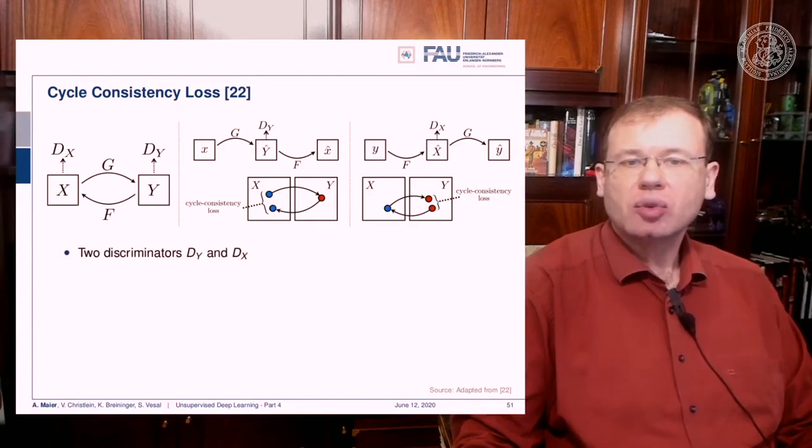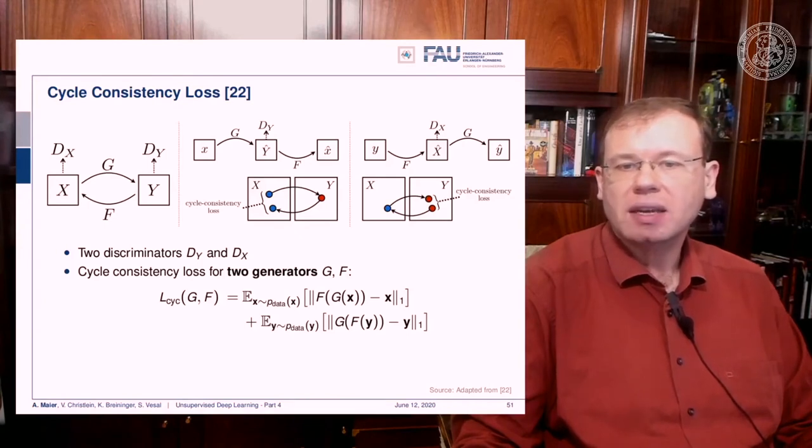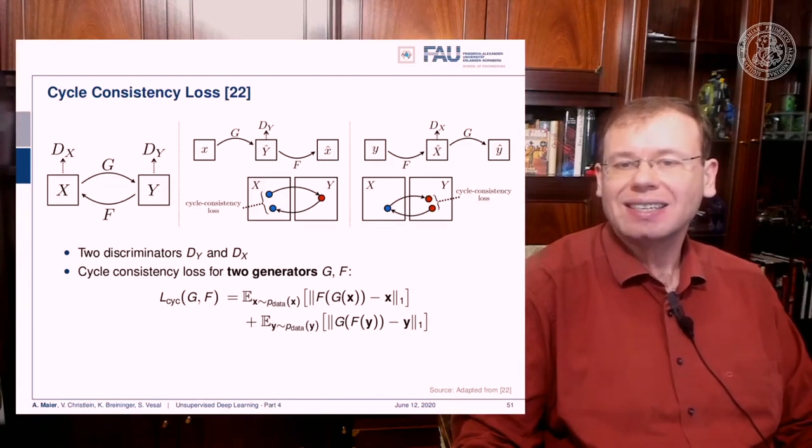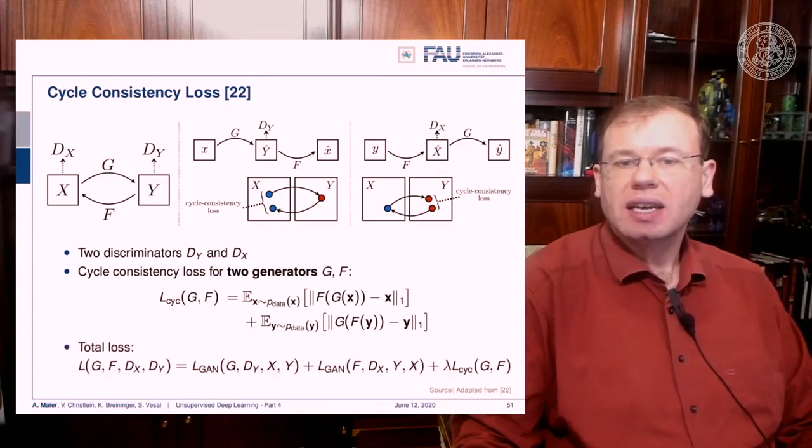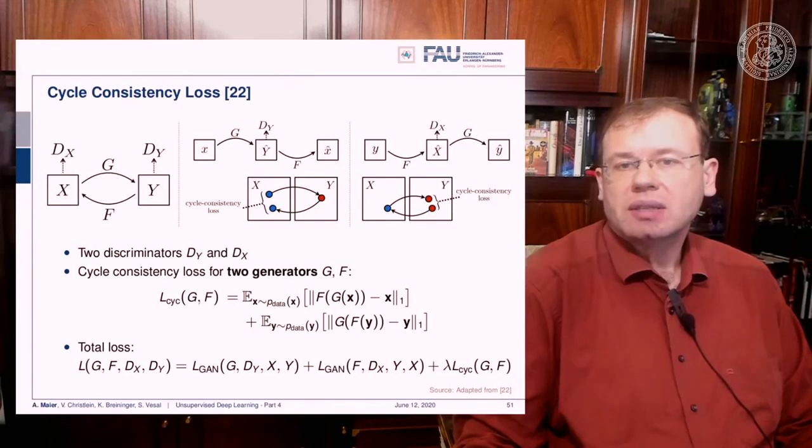You need the two discriminators, and this gives rise to the cycle consistency loss that we have noted down for you here. You can use L1 norms and the expected values of those L1 norms to form specific identities. The total loss is given as the GAN losses we've already discussed earlier plus lambda times the cycle consistency loss. This concept is fairly easy to grasp.